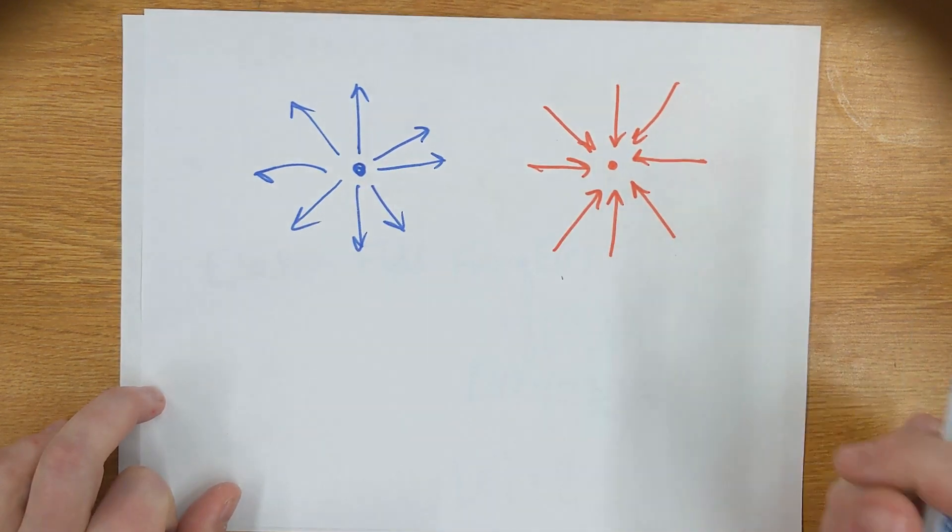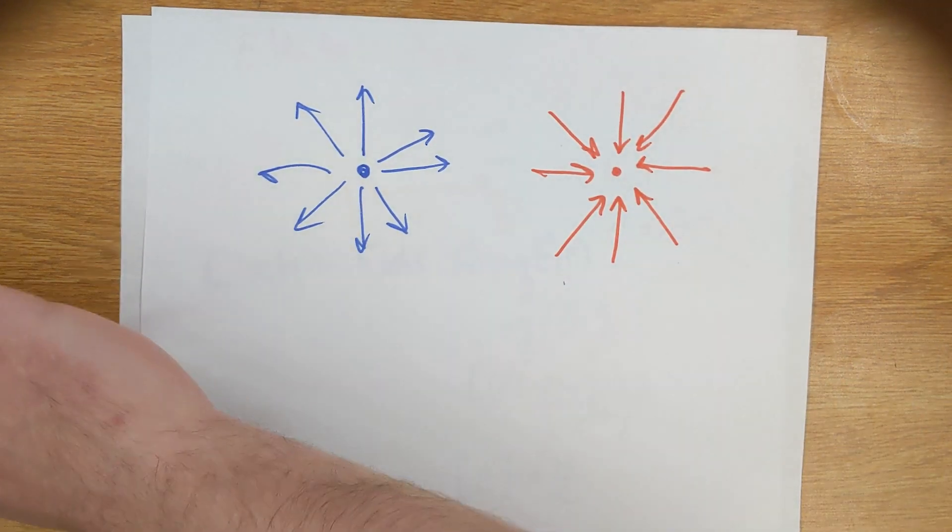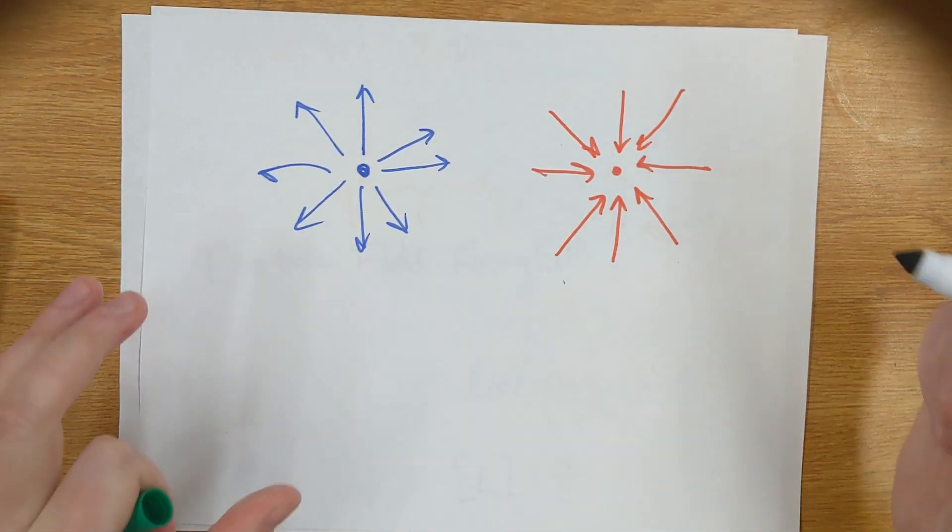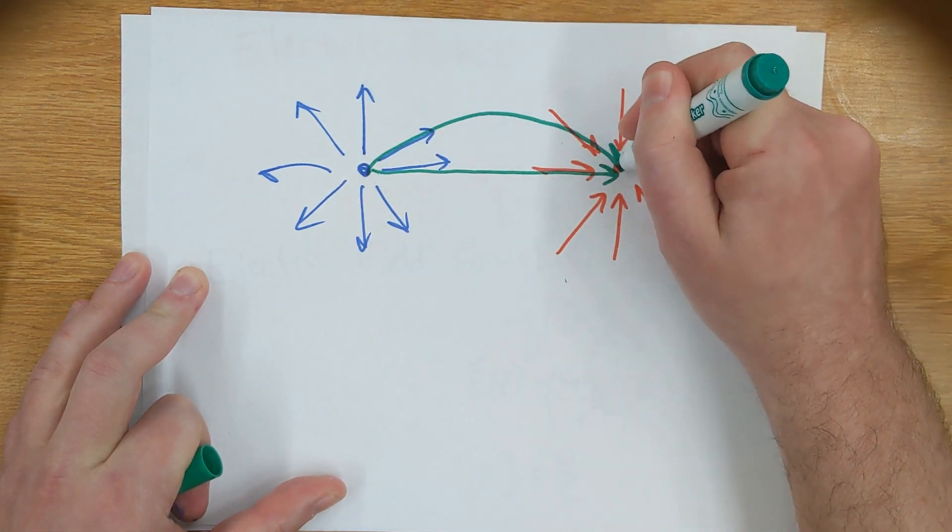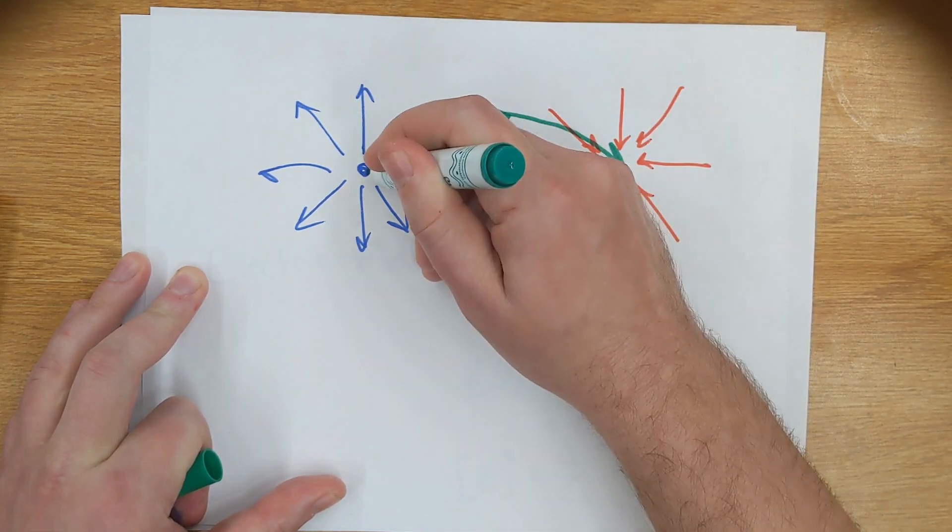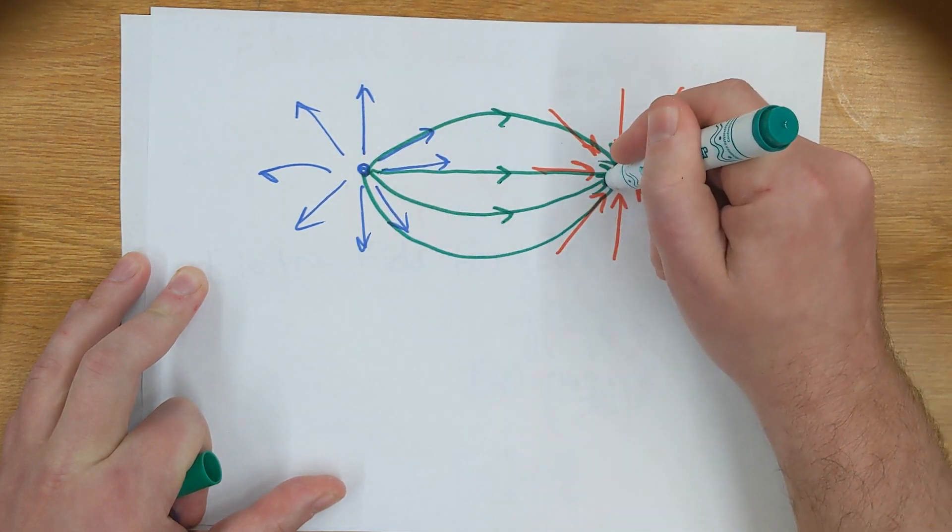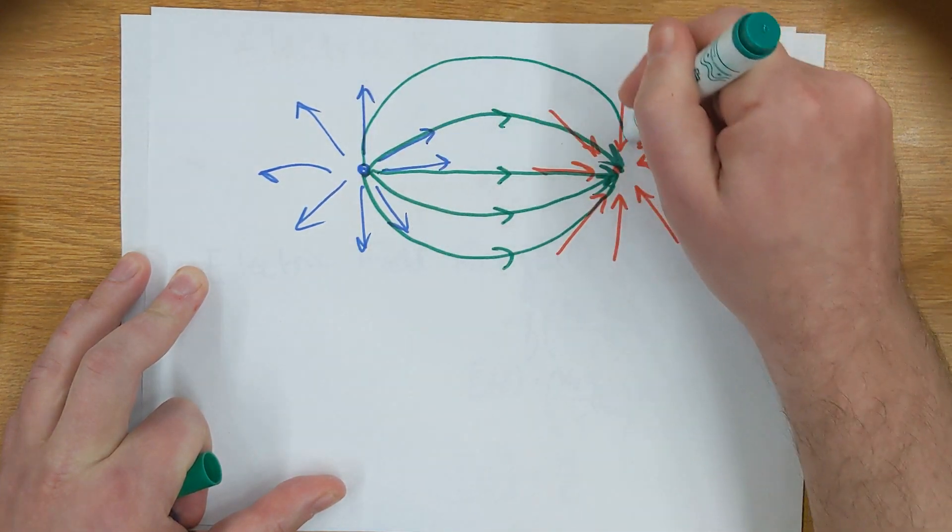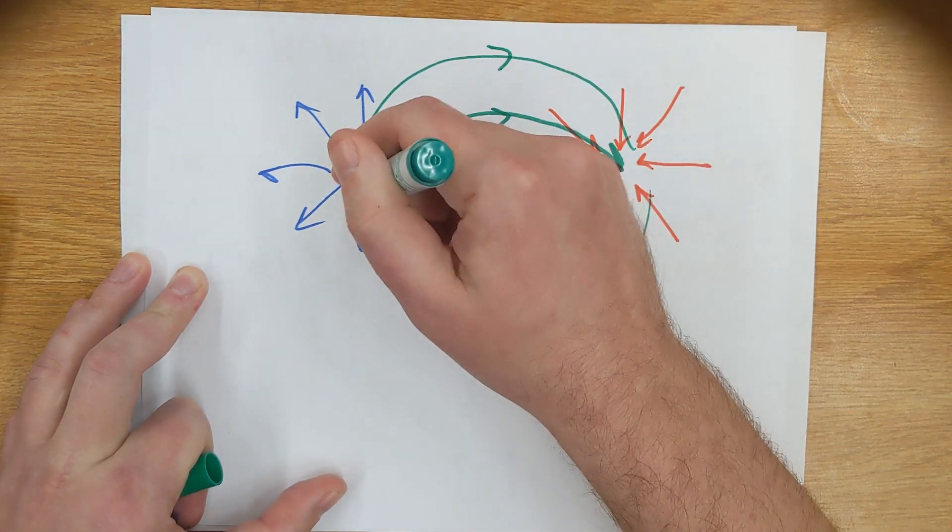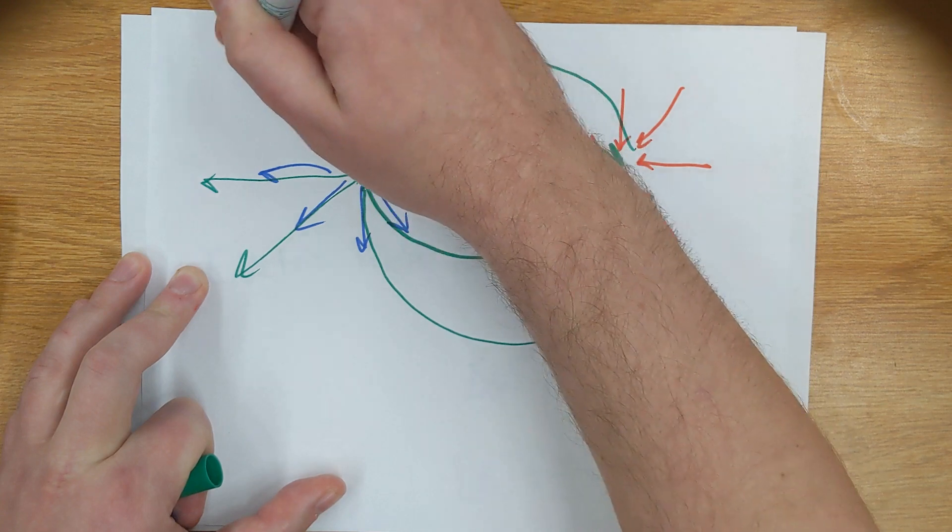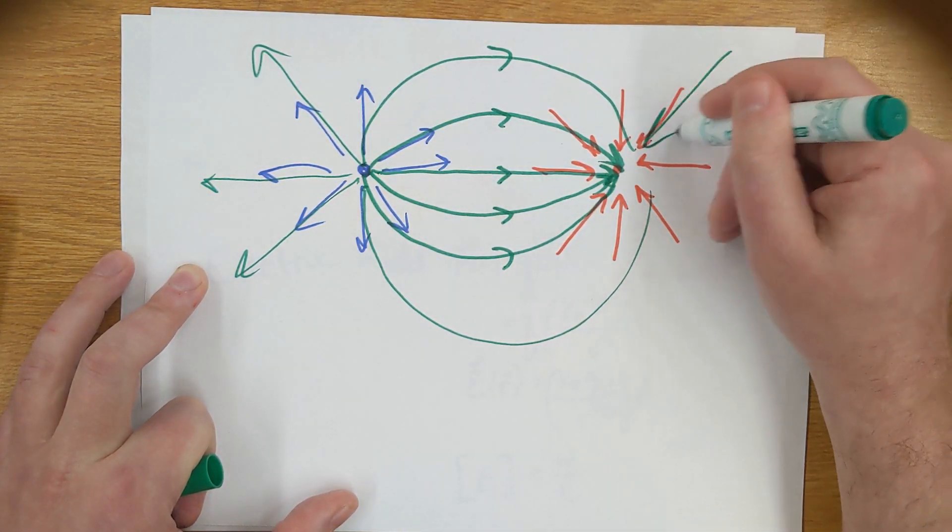Now we've said these are what the fields might look like if we had just the two charges. But in actuality, we have both of those charges in the same space. And if we vector sum those, we're going to get something that looks more like this kind of pattern, where we're directing along these curves, the shape of the electric field. And this is the kind of shape you would see if space were filled with little hairs that oriented along the direction that the field is going.